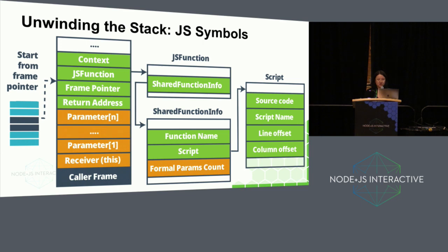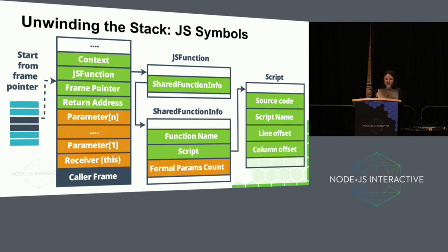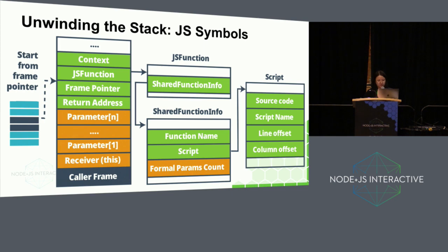The shared function info object also contains the number of formal parameters in the function. V8 lays out the arguments matching the formal parameters as well as the receiver - that is, the 'this' object - sequentially at another offset from the frame pointer. So Lnode can also try to reconstruct the arguments and the receiver passed to this function, by iterating through the pointers at those offsets.